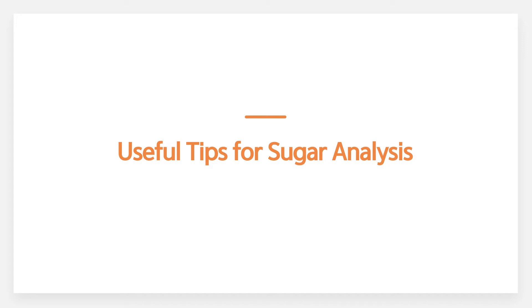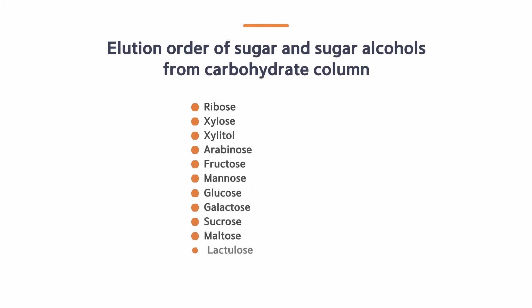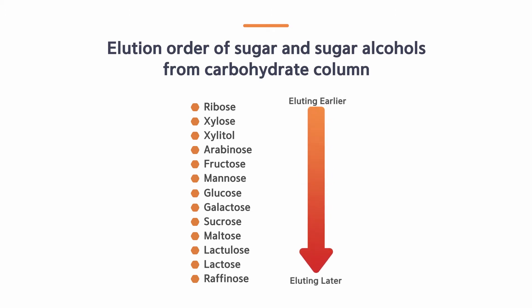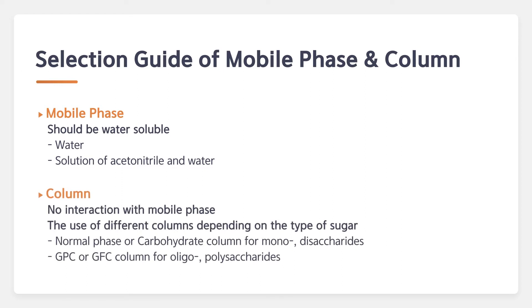You can see the elution order of sugars and sugar alcohols when using a carbohydrate column. In terms of choosing the right mobile phase and column for sugar analysis, you should use a water-soluble mobile phase because sugar is hydrophilic. For column selection, the column should have no interaction with the mobile phase, and you should use different columns depending on the type of sugar you analyze.